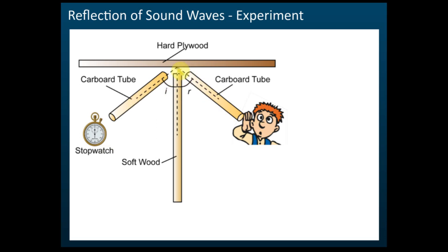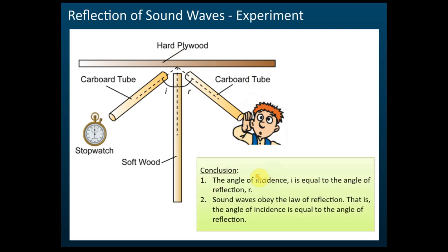There is a piece of paper here, so we draw the lines after adjusting the cardboards. Then we measure the angles of incidence and angles of reflection. The purpose is to see whether the angle of incidence equals the angle of reflection. We found that the angle i equals the angle r, meaning it obeys the law of reflections.